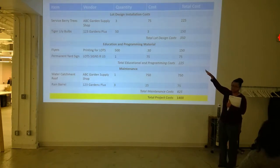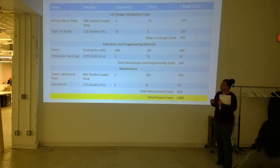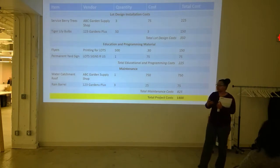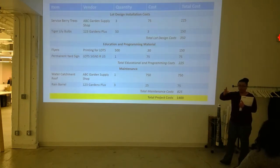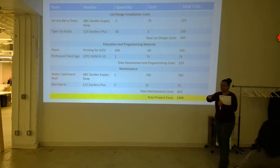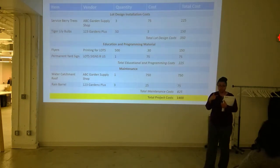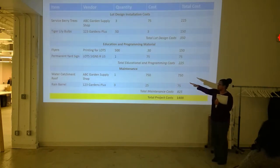That would also include any site prep, so I want that type of information to go there. These are just vendors and stuff that I kind of made up to give you an example. And then we want to know your education and programming materials — are you thinking flyers, t-shirts, signage? Those type of things. We want to know what you're thinking. Things are going to change throughout the entire process — we know it's going to change — but we want to at least see what you're thinking and how you're going to see this project potentially take place.